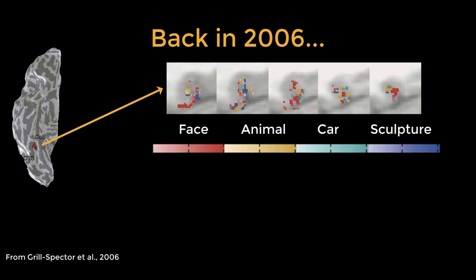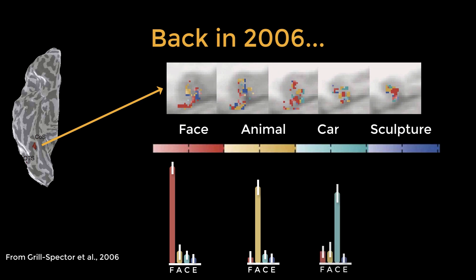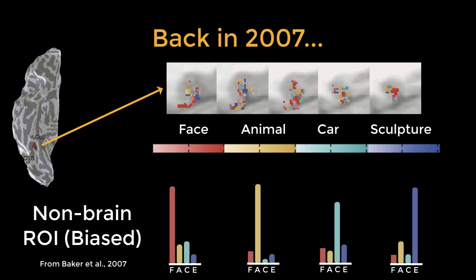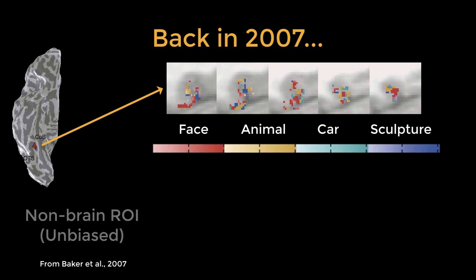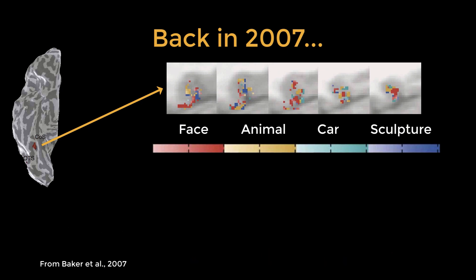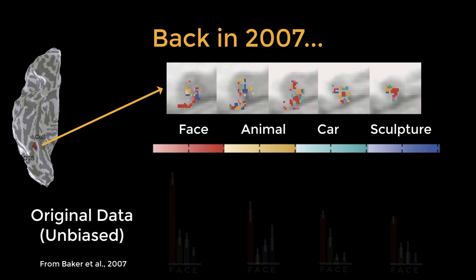Circular analyses can also happen with imaging data, although it's not as apparent when it happens. This was first pointed out in a study which examined activity in the fusiform face area in response to different stimuli. They extracted data from each condition's significant voxels and discovered a pattern of selective activity. However, it was pointed out that if you chose an ROI outside of the brain which happened to contain significant voxels just by chance and ran the same tests on those voxels, you would get the same pattern — which clearly shouldn't happen. When they re-ran the analysis using independent ROIs, they found a pattern of noise, as you would expect with a non-brain ROI. When they ran an unbiased ROI analysis on the original data, the original pattern disappeared.